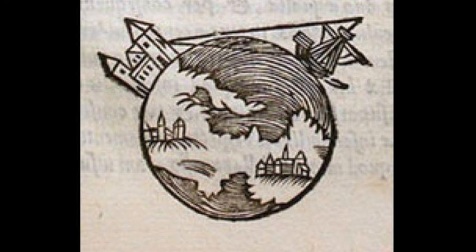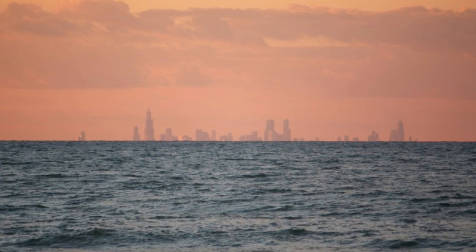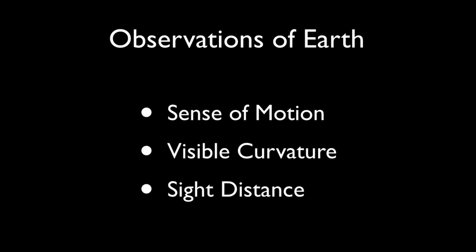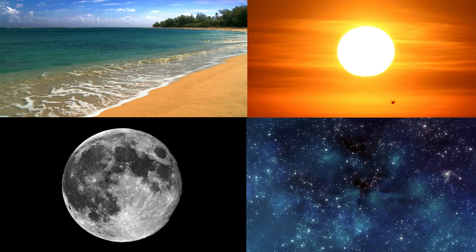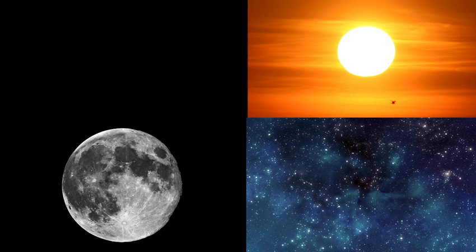Lastly, what about sight distance? The ancients told us of seeing ships disappear over the horizon, hull first and masts last, but the video evidence of this seems lacking, especially with today's advanced cameras. An interesting conversation surrounds images of Chicago across Lake Michigan, and an amusing back and forth can be found using this one photo. Some say if the Earth were a globe, we shouldn't be able to see Chicago at all. But others say that if the Earth were flat, Chicago wouldn't look like it was underwater. It seems we're no closer to deciding the debate based on our observations of sense of motion, visible curvature, or sight distance. The first two rely not on measurements but human perception, while the third causes both camps to conclude that their side is right. By our three observations of the Earth, we seem to have only muddied the waters of the debate.